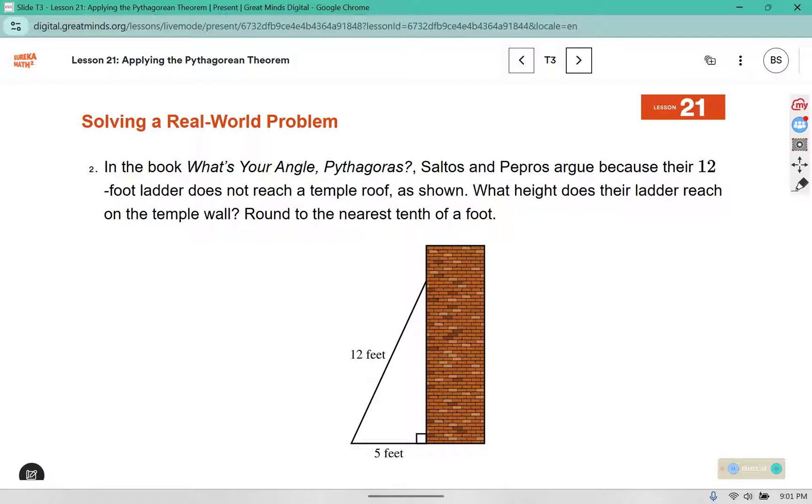In the book What's Your Angle, Pythagoras, Saltos and Pepros argue because their 12-foot ladder does not reach a temple roof, as shown. What height does the ladder reach on the temple wall? Round to the nearest tenth of a foot.